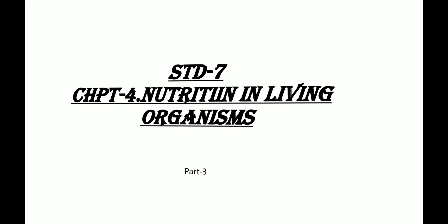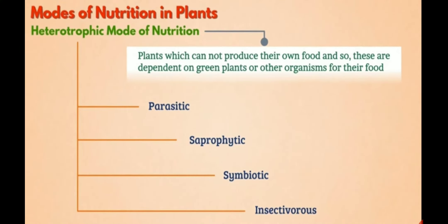In autotrophic mode of nutrition, organisms prepare their own food. Now let's talk about heterotrophic mode of nutrition. Plants which cannot produce their own food are dependent on green plants or other organisms for food. Such nutrition can be parasitic, saprophytic, symbiotic, and insectivorous.